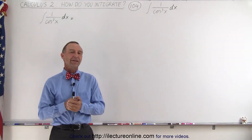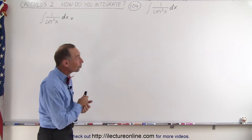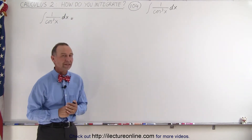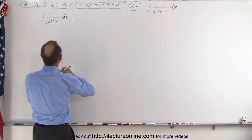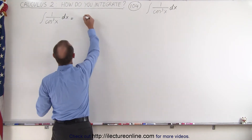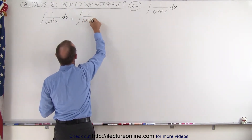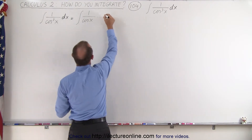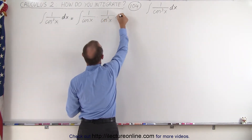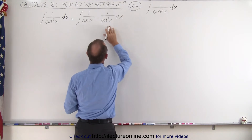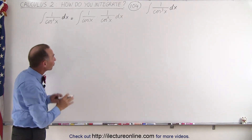Welcome to our lecture online. Our next integral is the integral of 1 over the cosine cube of x. The trick is to separate 1 over the cosine cube of x into the product of 1 over the cosine of x times 1 over the cosine square of x dx. Once we have it in this form, we can use integration by parts to solve that.